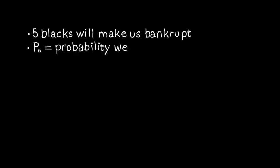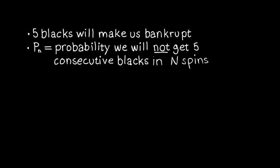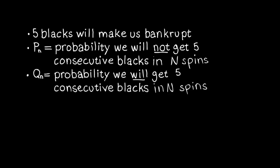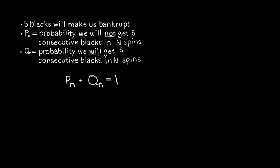Let's assume five consecutive blacks will bankrupt us. Let's let pn be the probability we do not have five consecutive blacks in n spins, and q of n the probability we do. Notice they have to sum to one because one of these two things happen. So let's find a formula for pn.